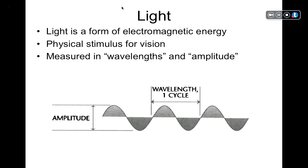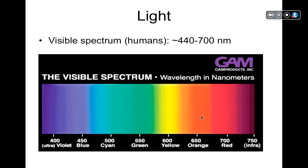Without light, we wouldn't be able to see, so our visual apparatus depends on the presence of light. Light is measured in wavelengths and amplitude. Think of amplitude as the distance between a peak and a trough. Think of wavelength as the distance between the beginning of one waveform and the beginning of the next. So we can measure light both in terms of wavelength and amplitude.